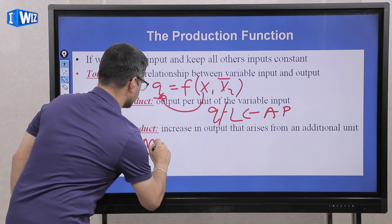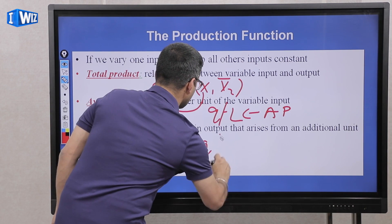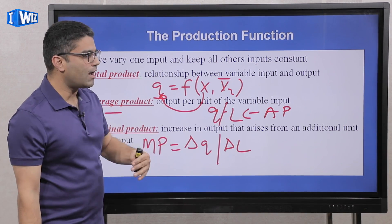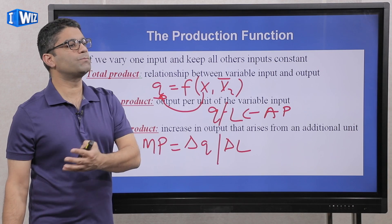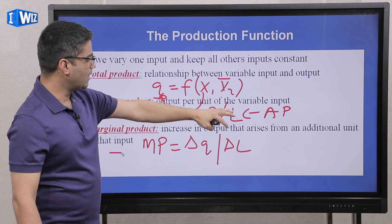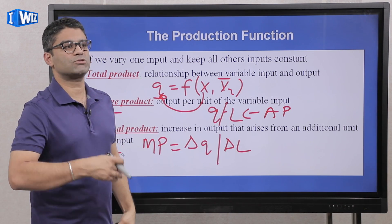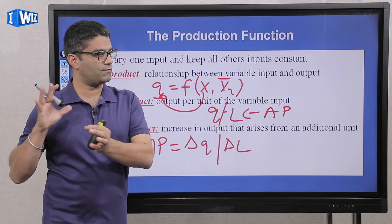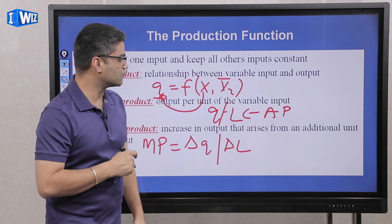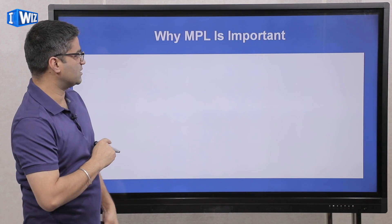Marginal product is perhaps the trickiest — it's the change in output divided by the change in labor. If the bakery hires one more person, how many more cakes can they produce? Average product just tells you on average, if you have ten people working for you, how much do they produce on average. It doesn't differentiate between how productive your first or last worker is.